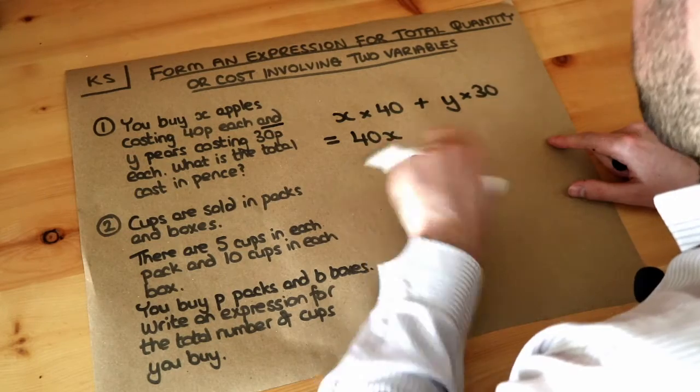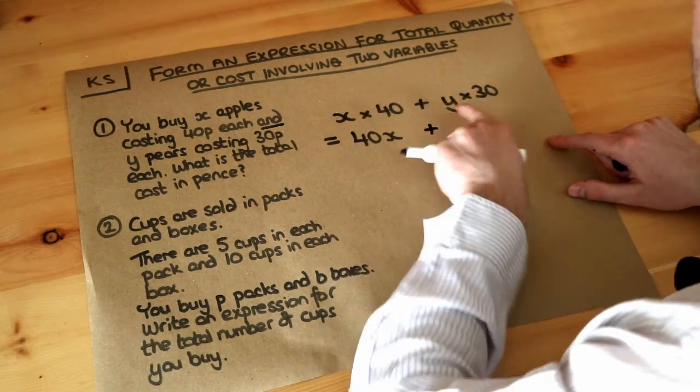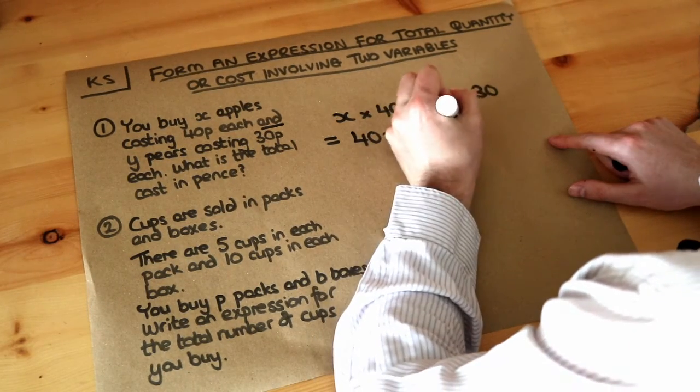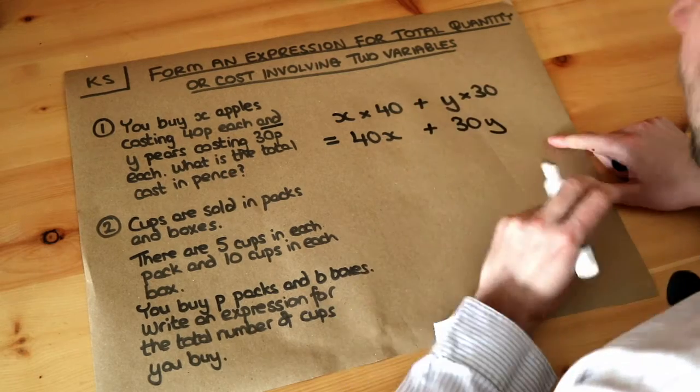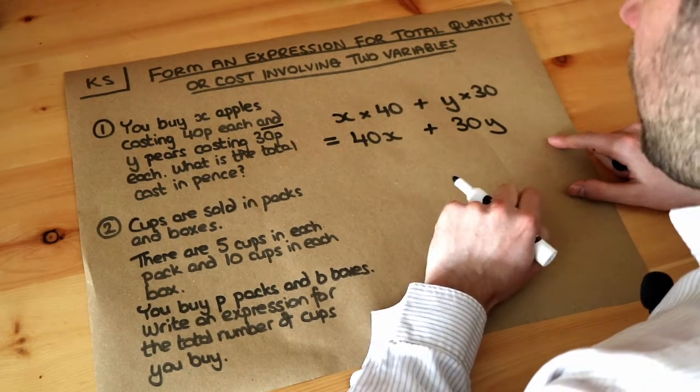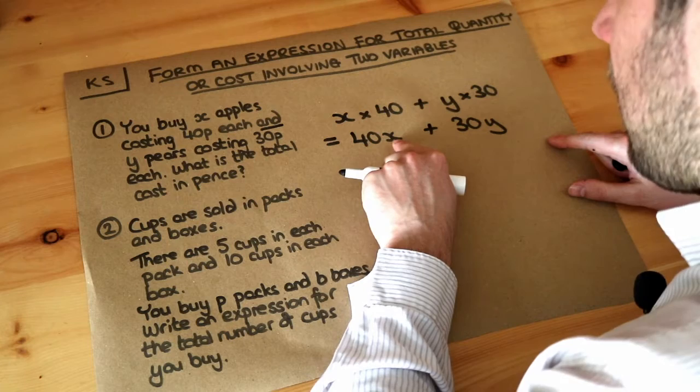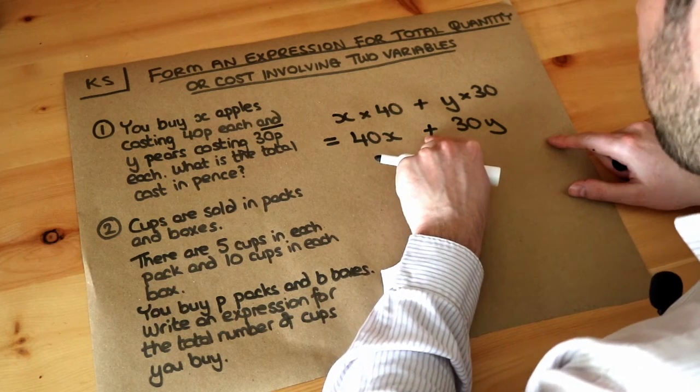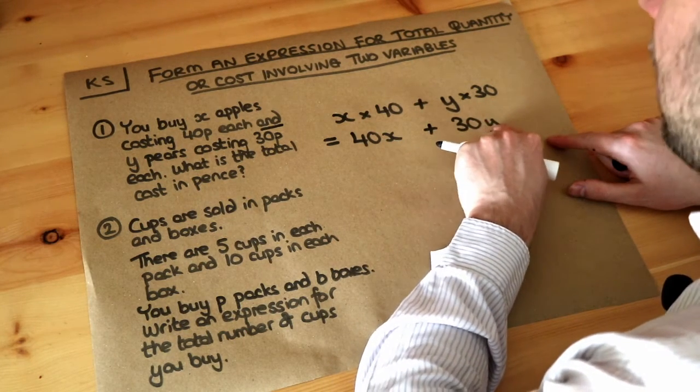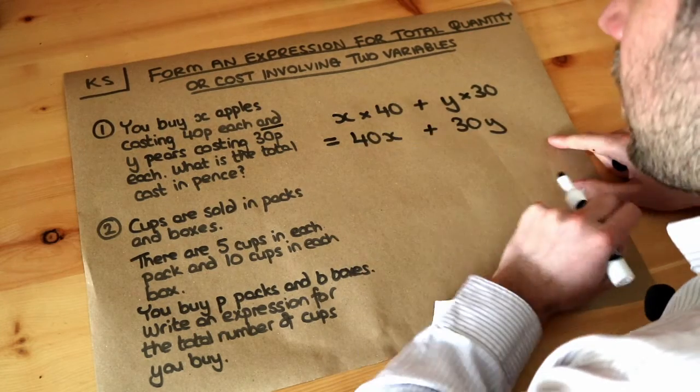We always put the number before the variable, and it's the same here. y times 30 is just 30y. And that is the final expression. We've got 40p multiplied by the number of apples plus we've also got the cost of 30p times the number of pairs, and that will be the total cost.